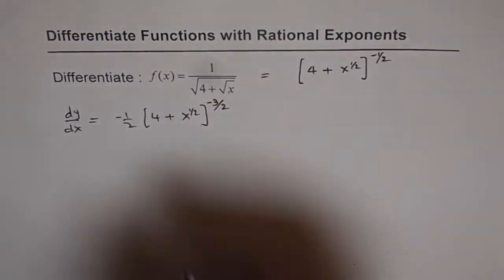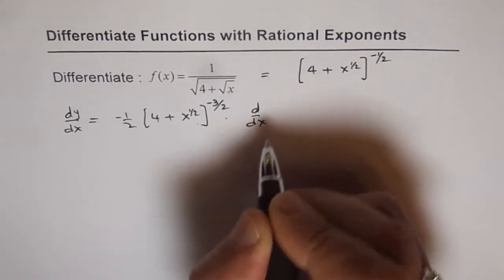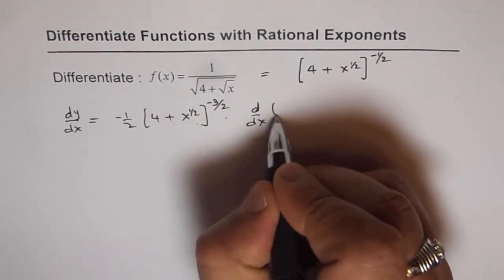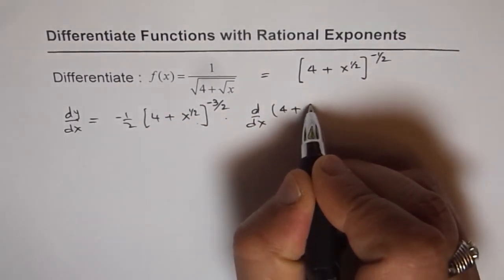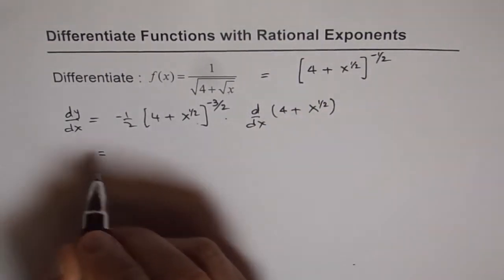Times derivative of inside function. Times d dx of inside function which is 4 plus square root of x, I can write x to the power of half. So that is the derivative.